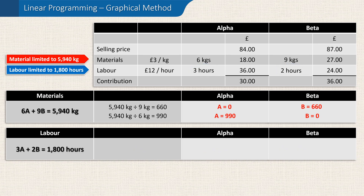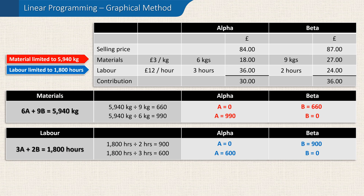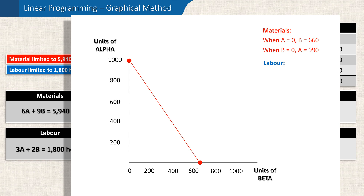Using this new equation, we can see that if there are no alphas made, then all the time will be spent making betas. 1,800 hours divided by the two hours it takes to make each beta means we can make 900 betas if we don't make any alphas. And if we choose not to make any betas, then with our 1,800 available hours we could make 600 alphas at 3 hours each. And now we have another two points we can plot on our graph, and we draw a line between the two points.